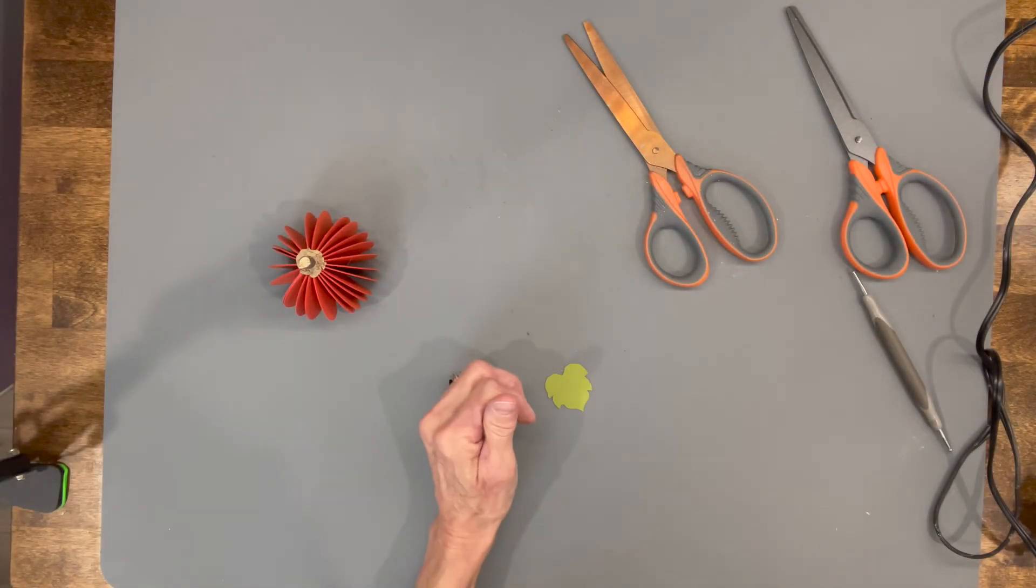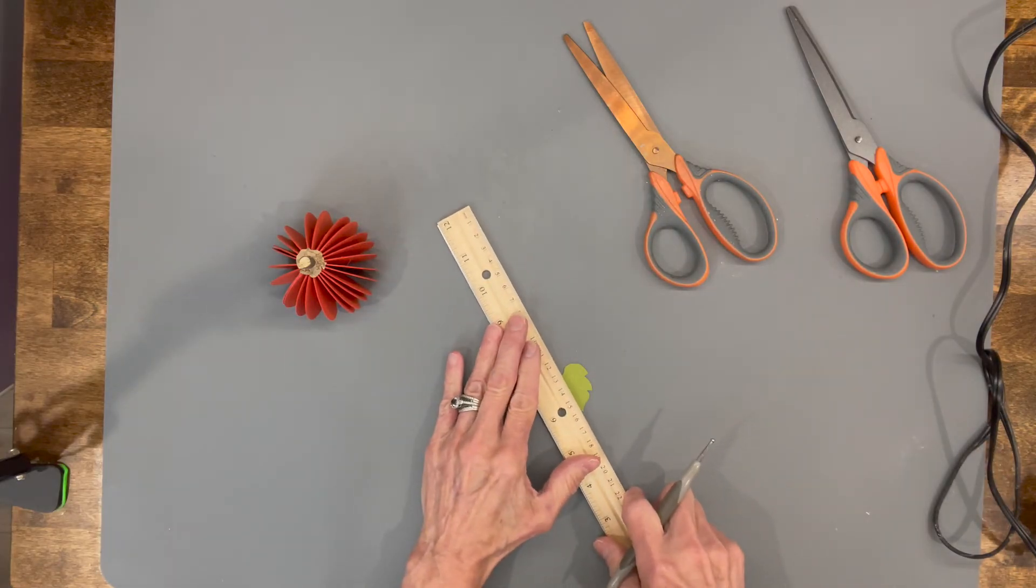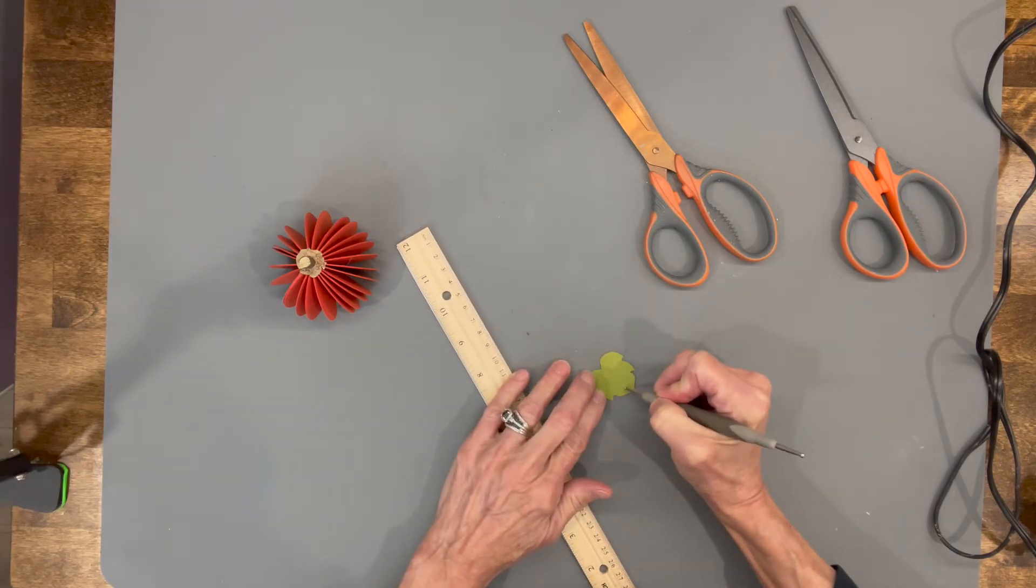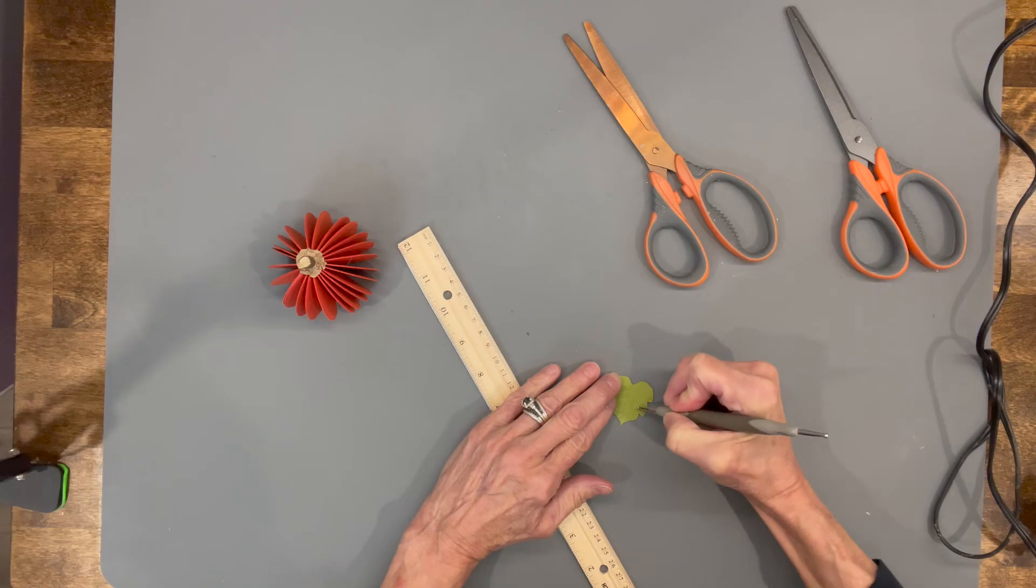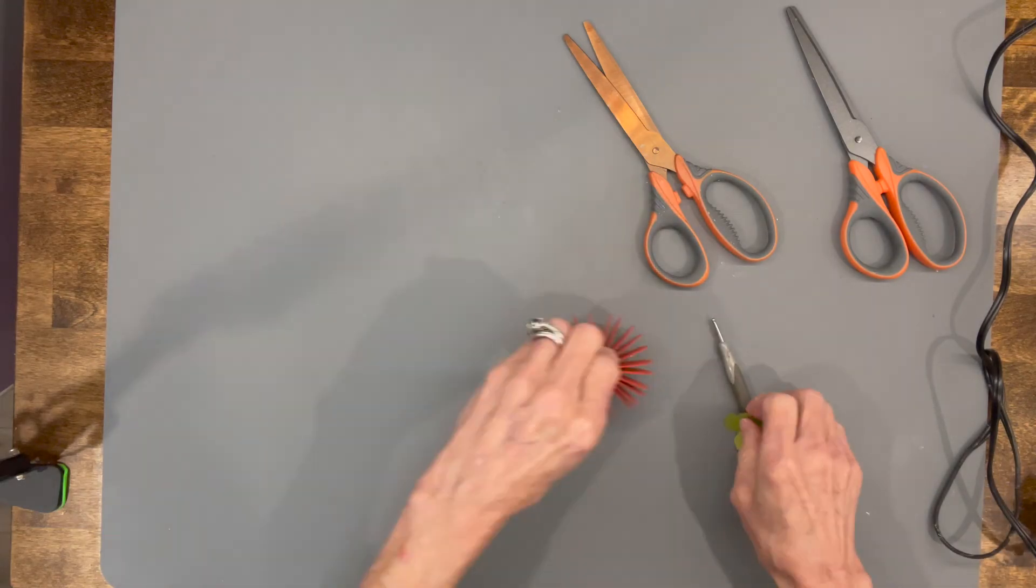Next we're going to take our leaf and put a score line right down the middle of it. Just take a ruler and run a score line right down the center. Then we're going to put some little veins on both sides—just draw some lines. Then we're going to bend it at the score line and just glue it to our pumpkin.